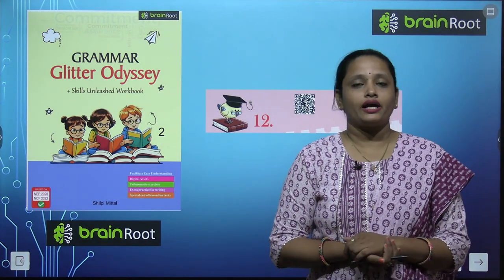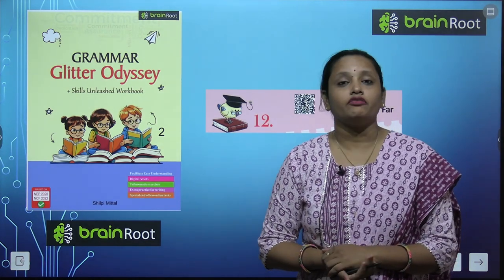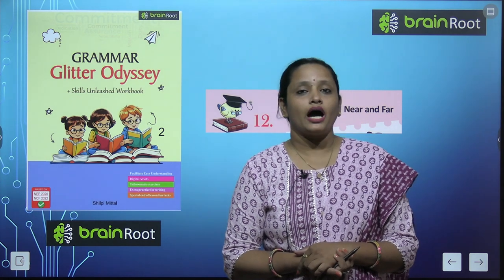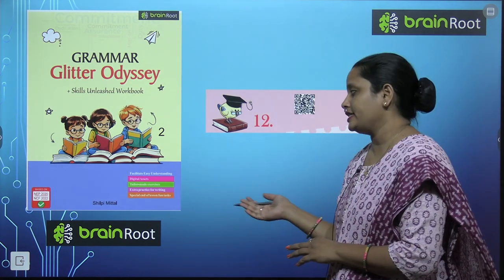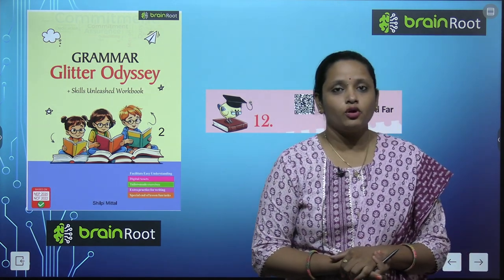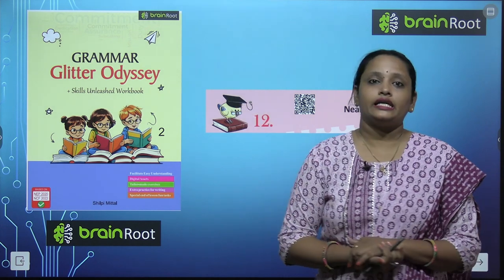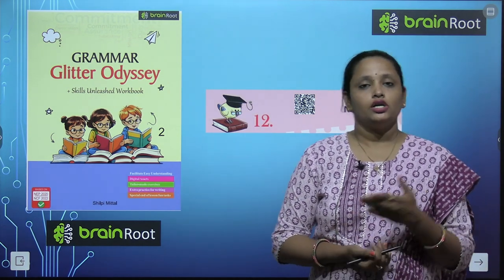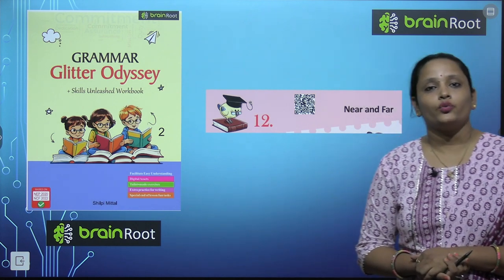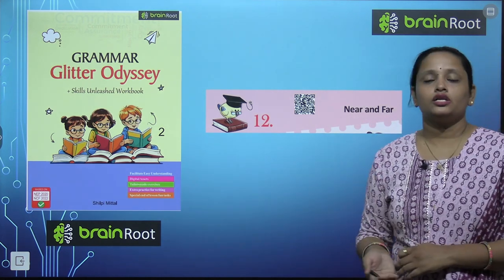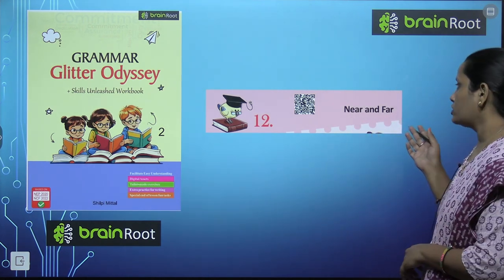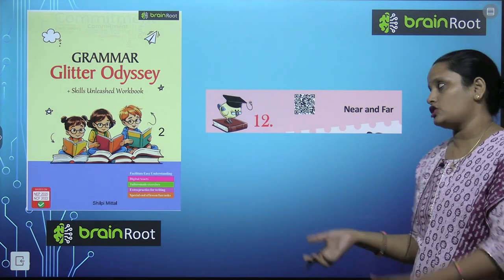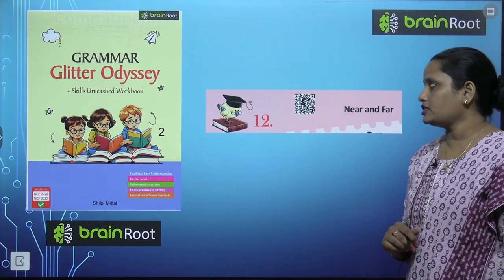Hello my dear kids, welcome back. I am Vandana and we are learning English Grammar by Brainroot series, and here is a book Grammar Glitter Odyssey. This is book 2. Today we will start with chapter number 12 and the name of the chapter is Near and Far. So let's start this chapter.